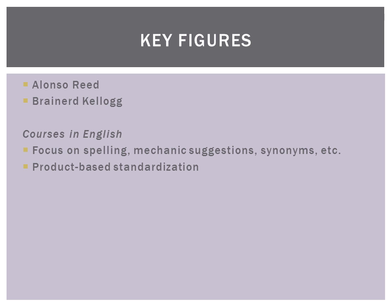Key figures include Kellogg, who had courses in English focusing on spelling errors, mechanic suggestions, synonyms, and product-based standardization — writing books that gave a 19th and early 20th century approach to how English should be written.